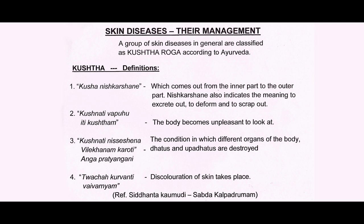Kushnati Vapuhu — the body becomes unpleasant to look at. Kushnati Nishesheshena Vilekhanam Karoti Angaprachyam Gani — the condition in which different organs of the body, Dathus and Upadathus, are destroyed. Tachyam Karoti Vayivaranyam — this coloration of skin takes place. This is from Siddhanta Kaumadhi, saying that the definition of Kusta goes like this in different conditions.